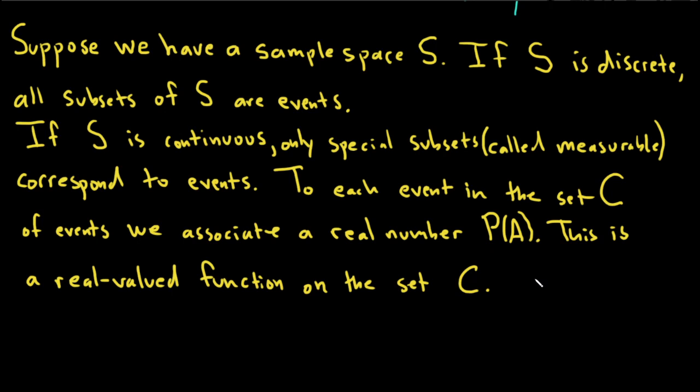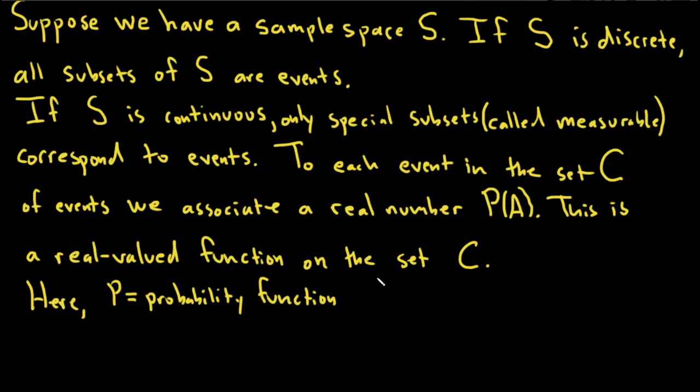Here P is called the probability function and P of A is the probability of event A.